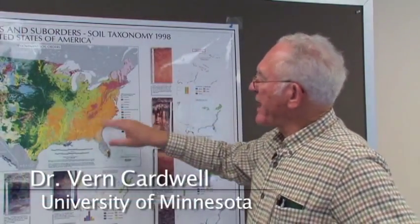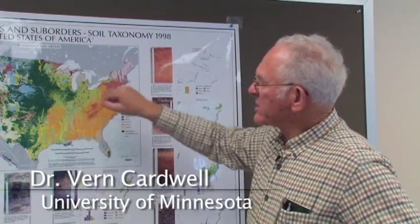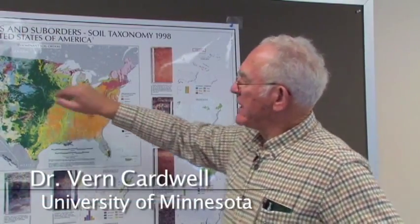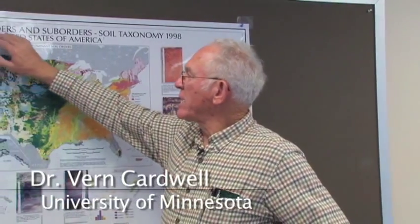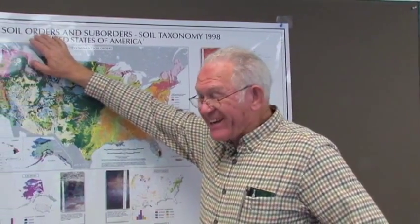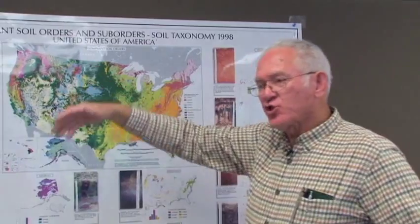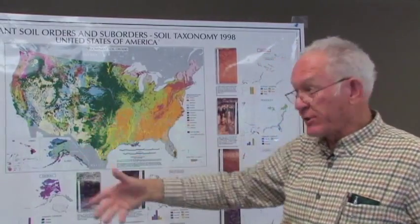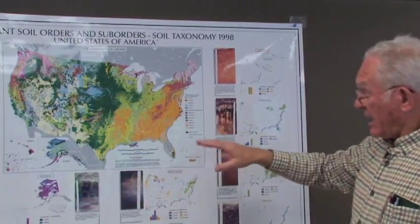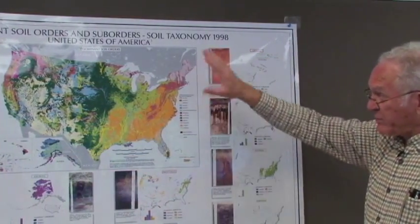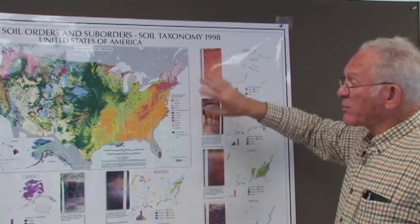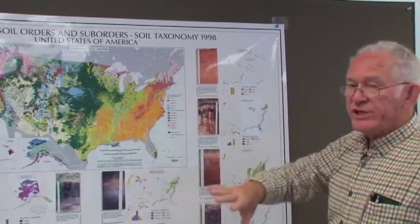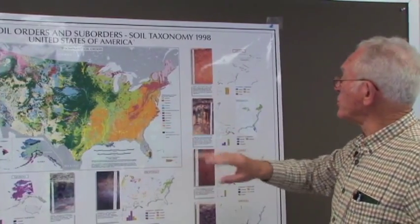As we look at a soils map, we see all of these colors, but this map is designed around the soil orders, not around soil series. These would be characterized as soils that we could compare with other regions in the world.